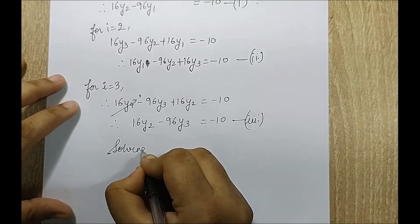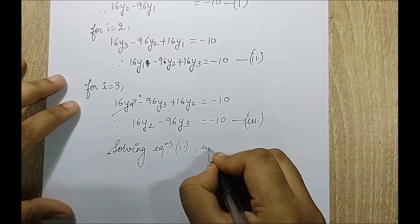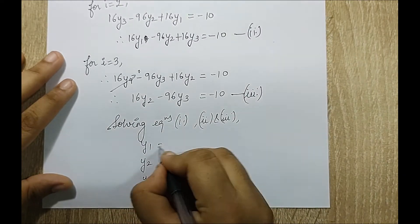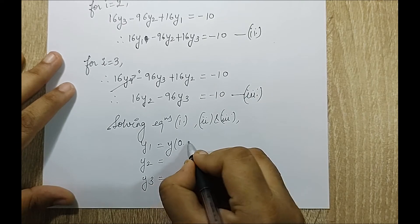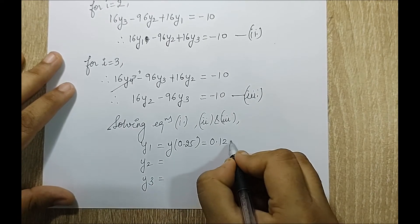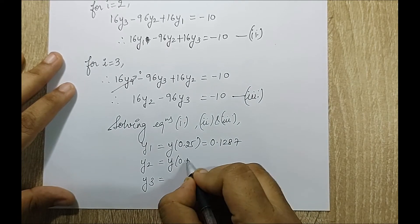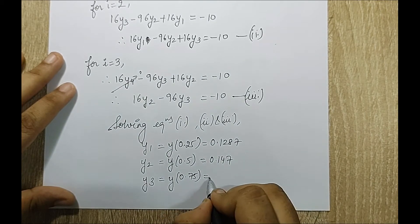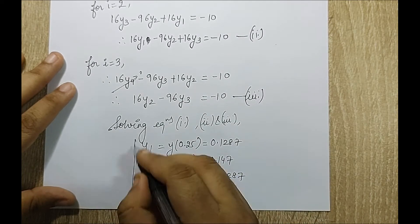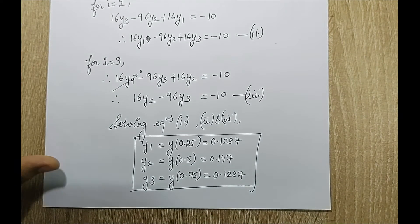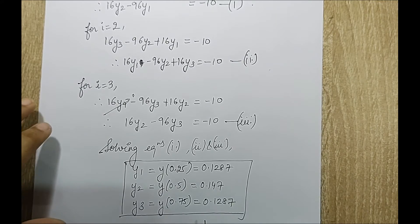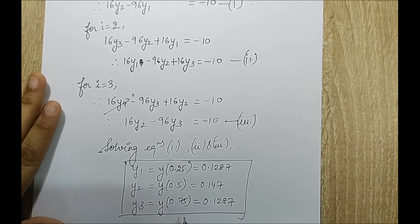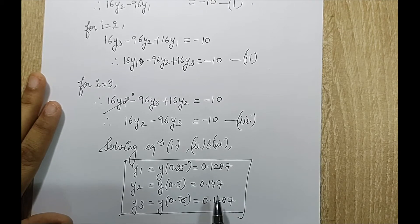Solving equations 1, 2, and 3 simultaneously, I get: y1, which is y at 0.25, equals 0.1287; y2, which is y at 0.5, equals 0.147; and y3, which is y at 0.75, equals 0.1287. These are the values obtained by the finite difference method. Since FDM is an approximate method, I will check these against the exact solution.